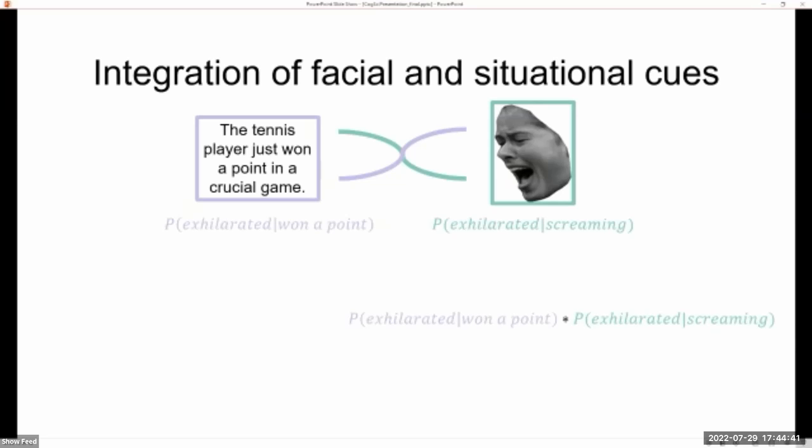Now, together with these estimates, as well as people's prior or baseline expectations of someone experiencing exhilaration, we can compute the probability of an observer inferring exhilaration in someone who just won a point on a game and is screaming.